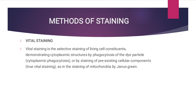Vital staining, or vital stain, is a selective staining method for living cell constituents. It is demonstrated by cytoplasmic structures through phagocytosis of the dye particle or by staining of pre-existing cellular components — for example, the staining of mitochondria by Janus green. In vital staining, the dye is excluded only by living cells but is taken up by already dead cells.